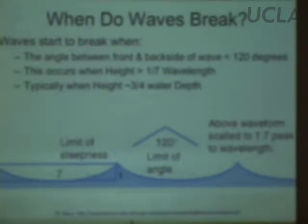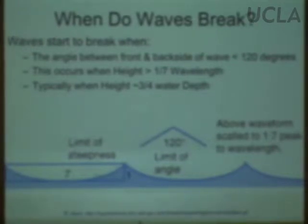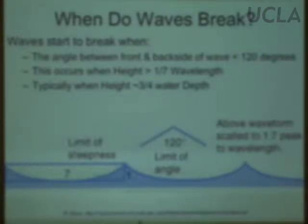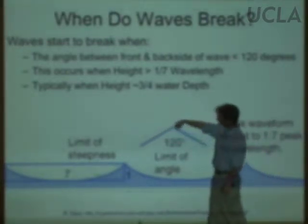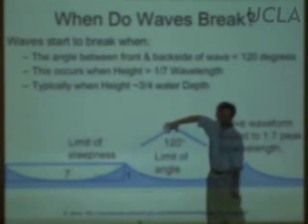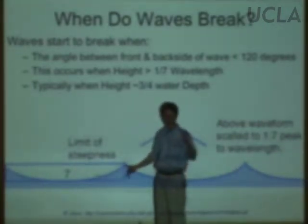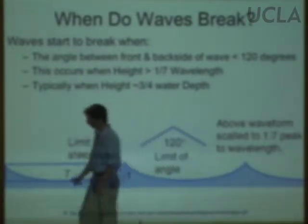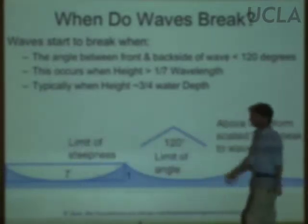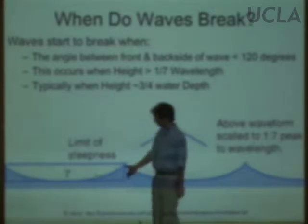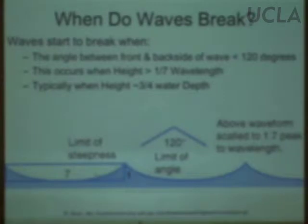As the wave gets into shallow water, the energy becomes more and more concentrated into a smaller volume of water, and eventually the wave just can't sustain that amount of energy. It breaks and starts to lose energy as it gets into shallower water. We can write some rules of thumb for when that process takes place. Surface water waves can remain stable as long as they have an angle around the crest of about 120 degrees or more. For shallow water waves, this tends to occur when the ratio of wave height to wavelength is about 1 to 7, and also roughly when the wave height approaches three-quarters of the total water depth.